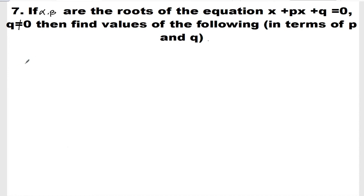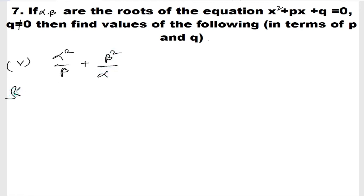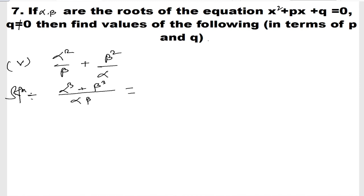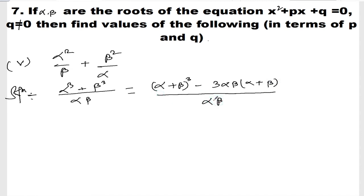Roman number 5: α²/β + β²/α. Taking LCM as αβ, we get (α³ + β³) / αβ. Like in roman number 4, α³ + β³ = (α + β)³ - 3αβ(α + β).